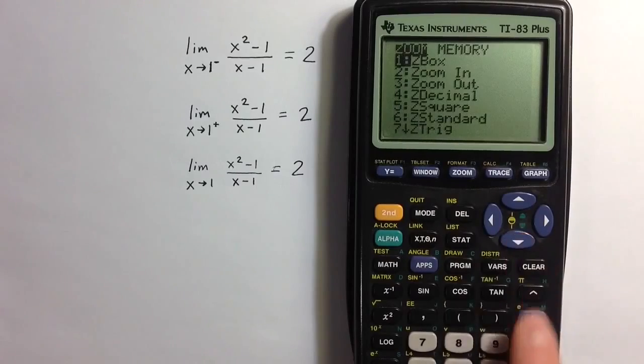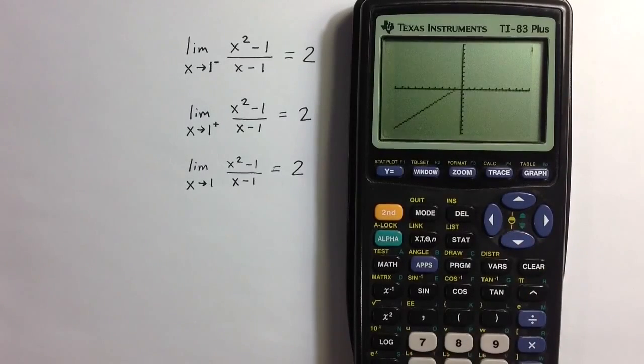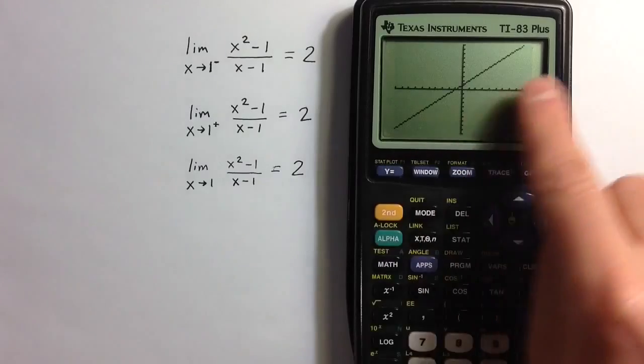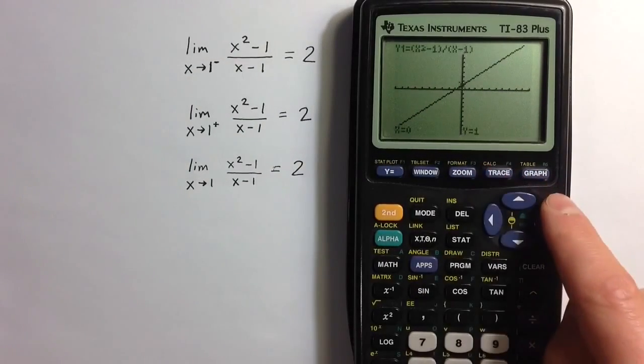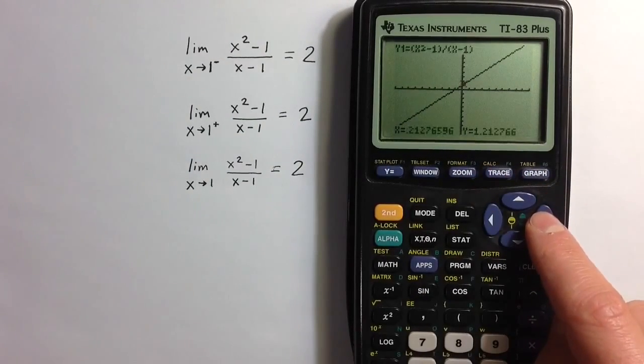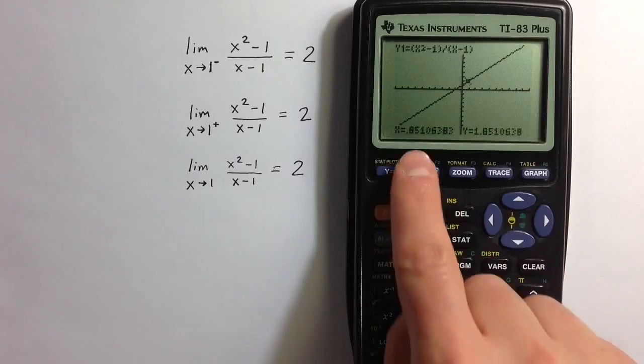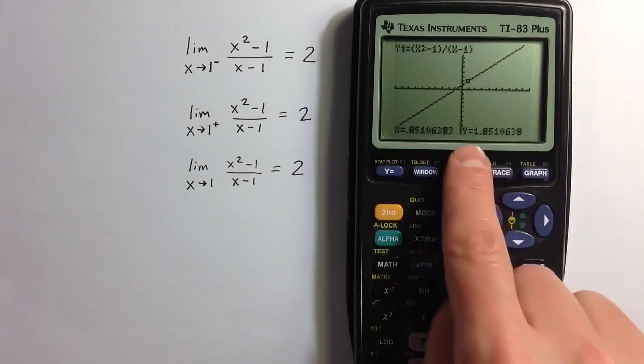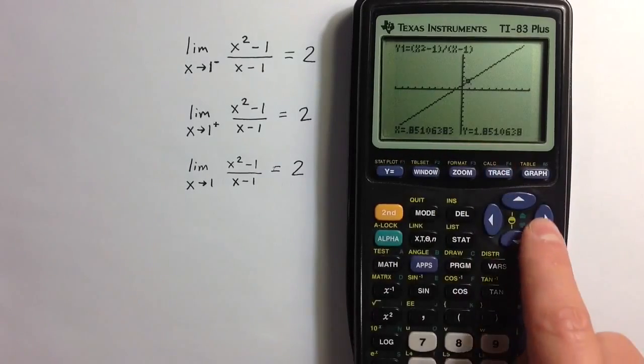And let's see what that looks like. Well, it seems like our function is just a straight line. Hitting the trace key, as we get closer and closer to x values equaling 1, the y values are getting closer and closer to 2.